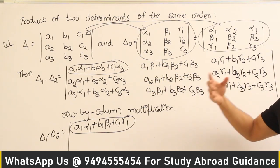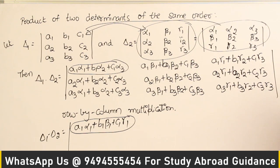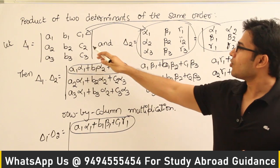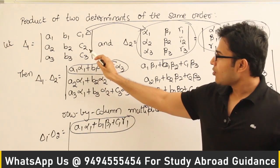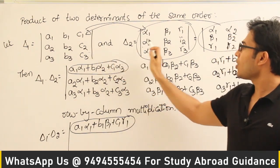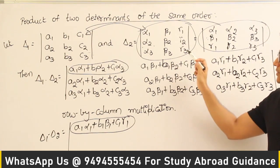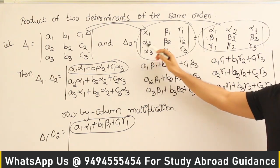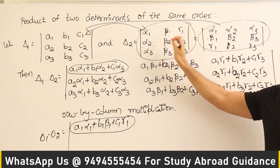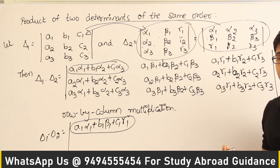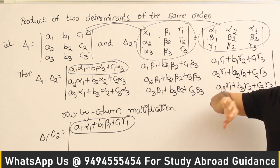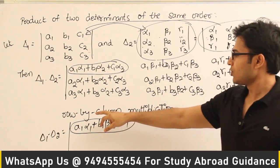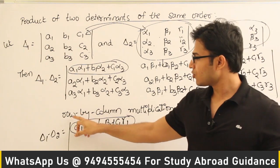What this means is you need not only go with row-by-column multiplication — you could even go with row-by-row multiplication. Row-by-row multiplication is the same as row-by-column multiplication with the transpose. Since these two are equal, row-by-column multiplication converts to row-by-row multiplication and gives you the same value. Even though the elements look different, the final value of the determinant will be the same whether you follow row-by-column multiplication or row-by-row multiplication.